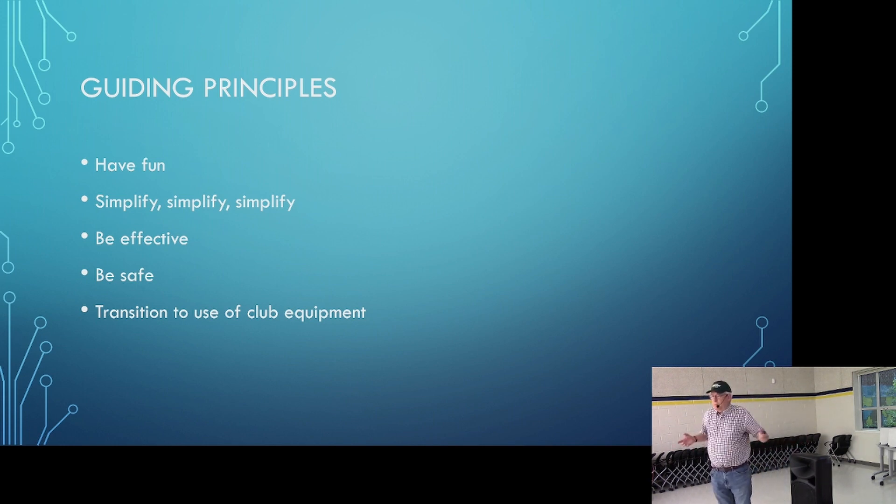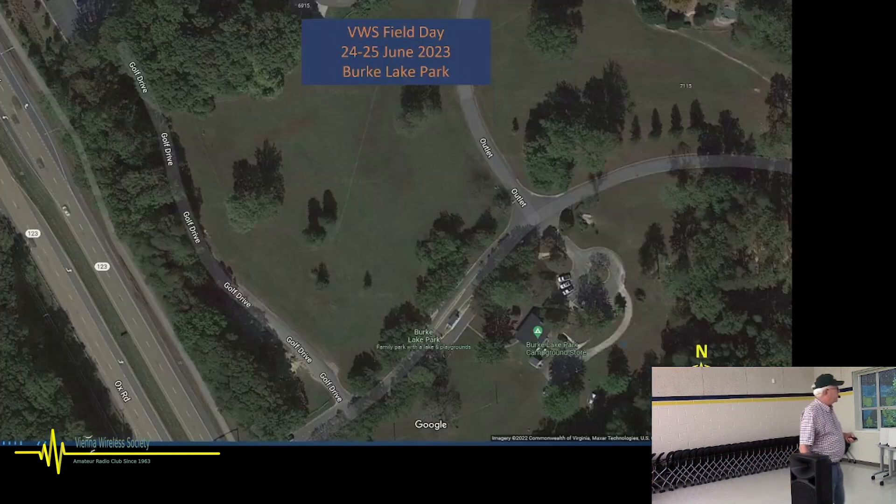And the other thing we're doing this year is we're transitioning to the use of 100% club equipment. In years past, members started bringing their radio gear to field day. And it got to the point where we really didn't have any of our own gear that we were using and very dependent on members. So the board made the decision to move us away from that after last year. And so we've acquired some new radios, antennas that I'll talk about. So we're well on our way to getting that sorted out.